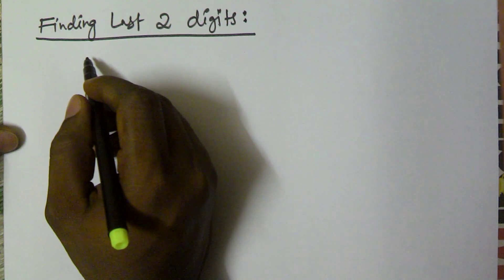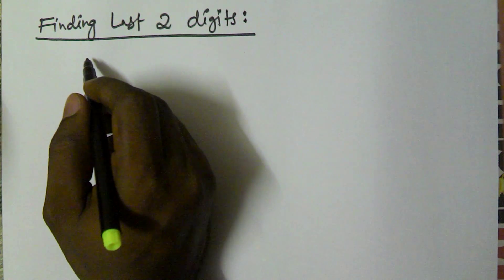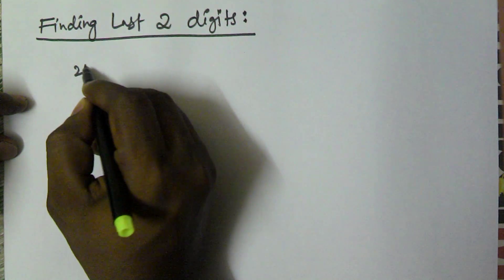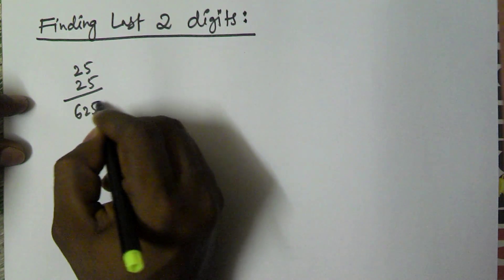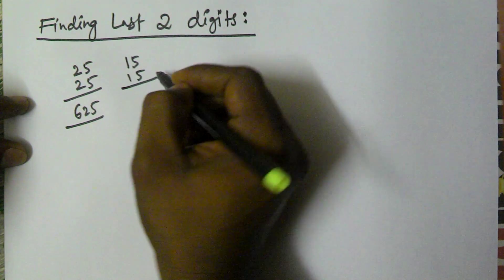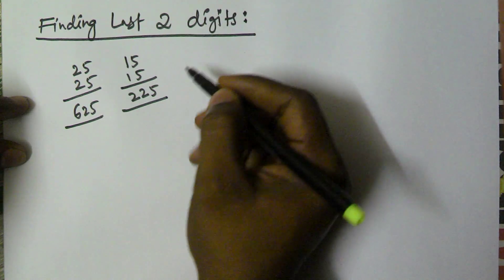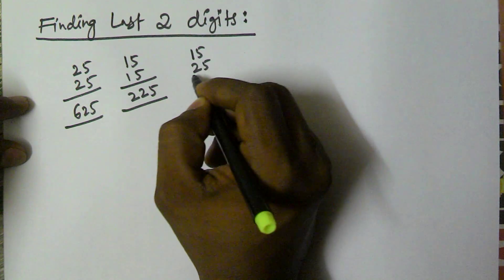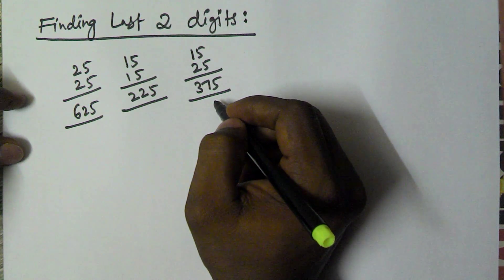Before explaining an example, I will explain the concept behind this logic. For example, 25 into 25 is 625. 15 into 15 is 225, and 15 into 25 is 375.